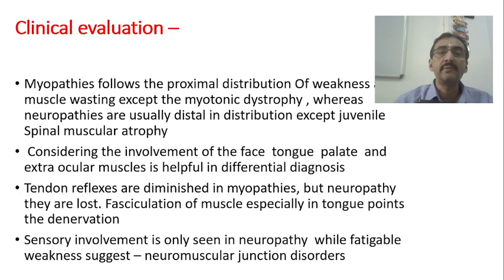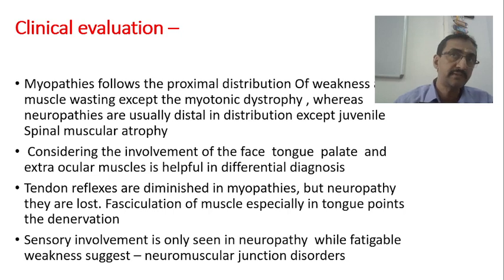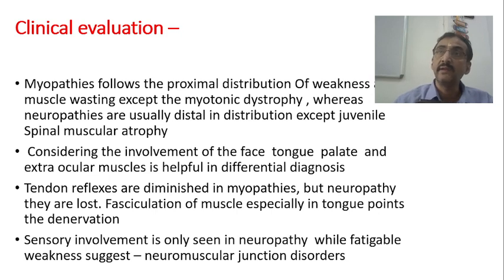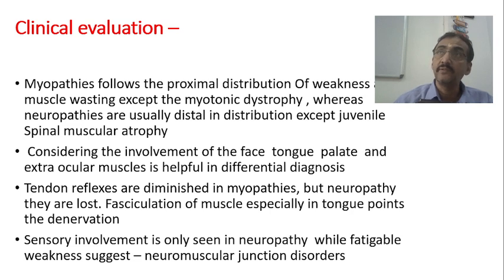For example, if you take myotonic dystrophy — not muscular dystrophy, but myotonic dystrophy — you will have muscle wasting. Proximal muscle weakness along with muscle wasting will be seen in myotonic dystrophy. The general rule is that in myopathies there is proximal distribution without atrophy, and in neuropathies there is distal distribution with atrophy. But the exception is that in myopathies also, along with proximal weakness, there may be atrophy — one example being myotonic dystrophy.